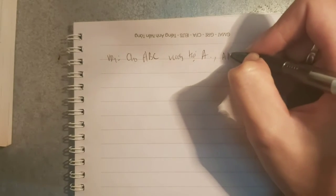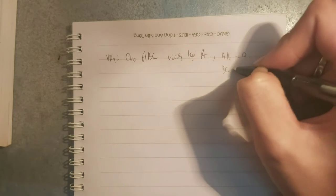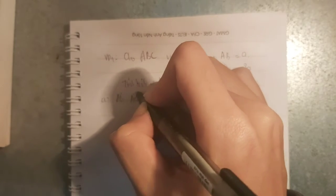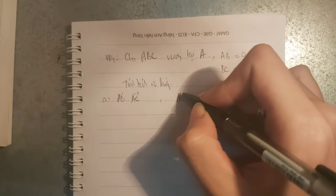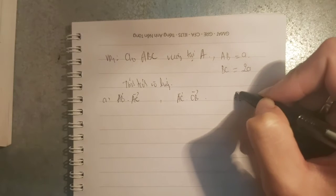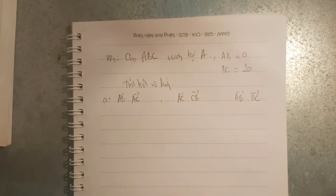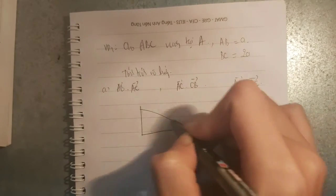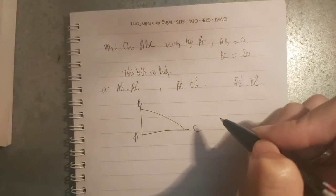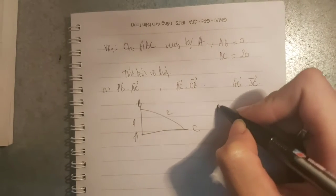Bài tập ví dụ thứ nhất. Cho tam giác ABC vuông tại A có AB = a, BC = 2a. Và tính tích vô hướng của: AB x AC, AC x CB, và AB x BC. Đầu tiên chúng ta phải vẽ hình trước. A, B, C đúng không? AB bằng a, BC bằng 2a. Thì cái AC sẽ bằng... AC tính AC trước. AC sẽ bằng căn của (4a² - a²) = a√3.